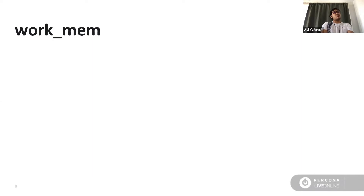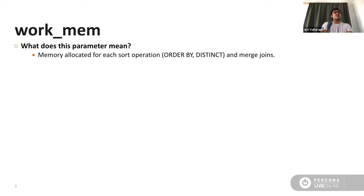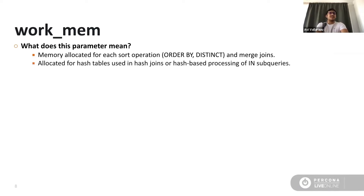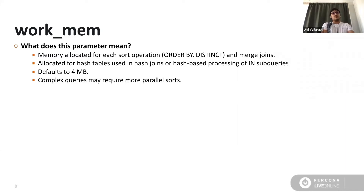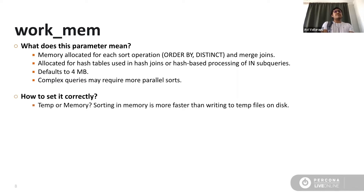Work mem is again one of the most importantly mistaken parameters. It's the memory allocated for each sort operation — when you do ORDER BY, hash tables are created, and merge joins also involve sort operations. Complex queries could involve multiple parallel sorts, so it's not just one sort operation per query. Multiple sort operations can happen per query. It defaults to four megabytes, so that much memory is allocated to each sort operation. If the allocated memory is not enough for sorting, Postgres starts writing temp files to disk. Anything happening in memory is faster, and anything written to disk in the form of temp files is slower.